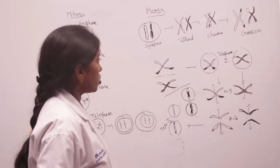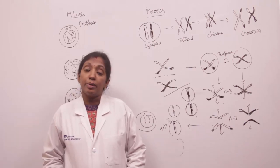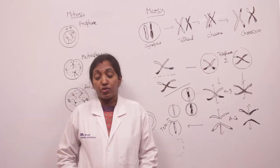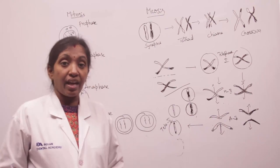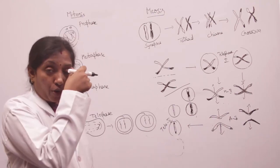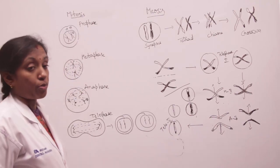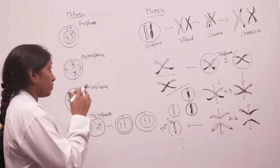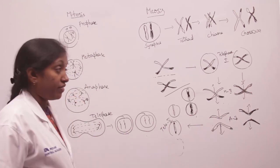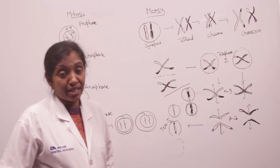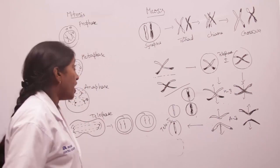Coming to meiosis, it is seen in the sex cells and primitive sex cells. It is a very important division in order to maintain the haploid number of chromosomes. Meiosis is otherwise called reduction division.